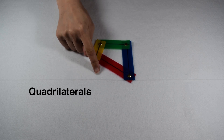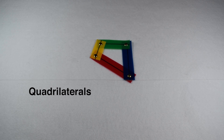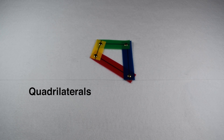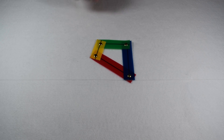Quadrilaterals are polygons that are made up of four edges. However, we also know we tend to use words such as squares, rectangles, or even trapezoids to describe a lot of these figures. What we need to look at is what takes a shape from simply being a quadrilateral to one of these more specific types.